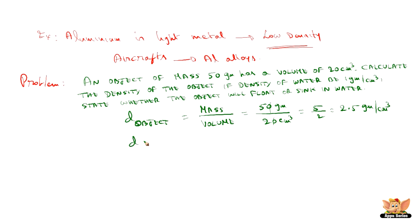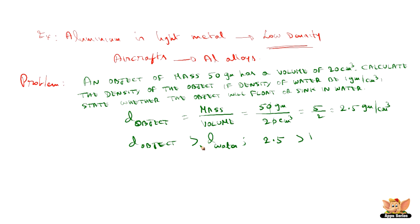Now comparing the density of the object with that of water, we understand that the density of the object is greater than the density of water. The density of the object is 2.5 and the density of water is 1, so 2.5 is greater than 1. Therefore the object will sink, because the density of the substance is greater than the density of water, meaning this substance is heavier than water, so the object sinks in water.